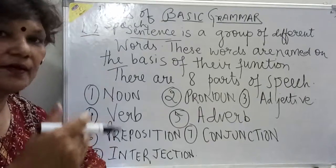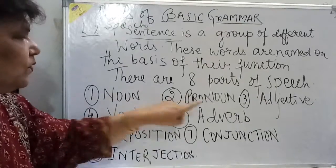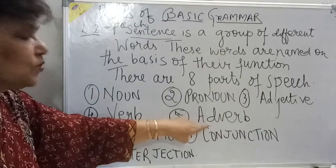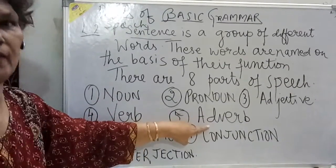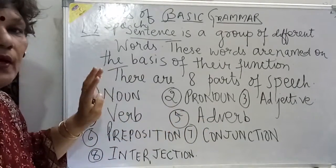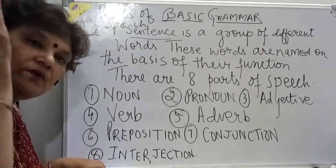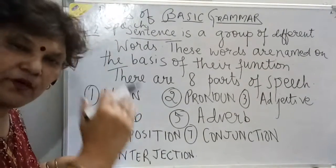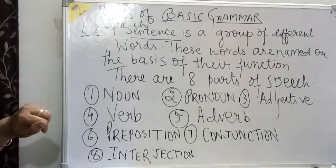In 'she walks slowly,' the word 'slowly' is an adverb. The adverb tells us about the verb — it adds more meaning to the verb. So the word that further qualifies or tells us more about the verb is called an adverb. 'Slowly' is the adverb here.